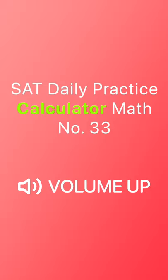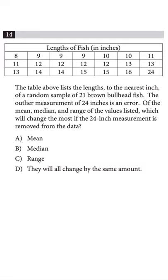Hey guys, welcome to SAT daily practice number 33. We have a calculator math question today which tells us that there's a set of data consisting of 21 brown bullhead fish data and there's an outlier of 24 inches.